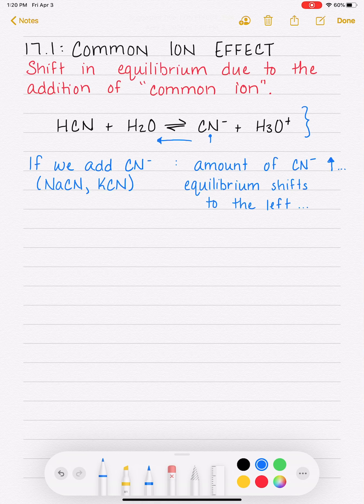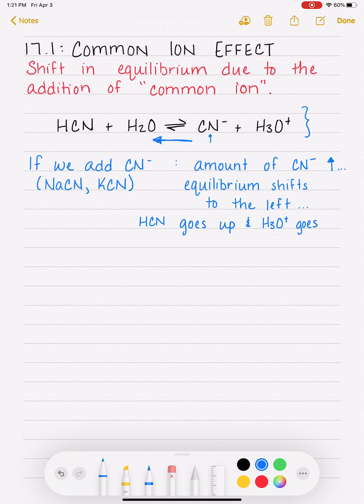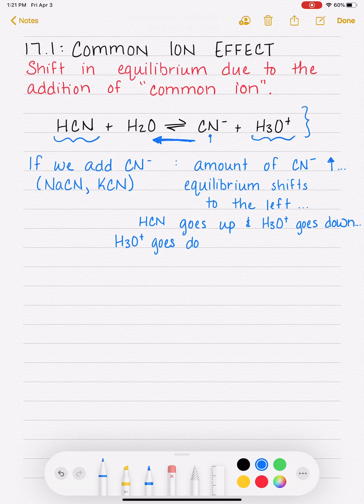And when the position of equilibrium shifts to the left, the concentration of everything is going to change. The concentration of HCN goes up because the position of equilibrium has shifted to the left - and not water, because we don't include water. And this is going to cause the concentration of H3O plus to go down. We're making more HCN and we're using up H3O plus. And when H3O plus goes down, this is going to cause the solution to become less acidic, more basic. The pH will go up.